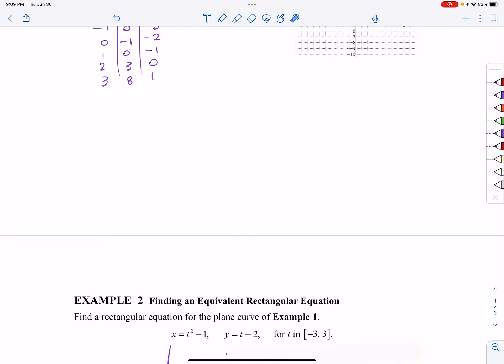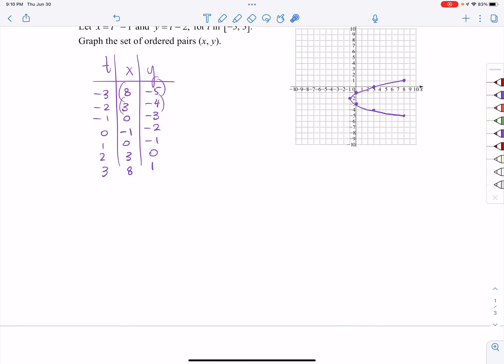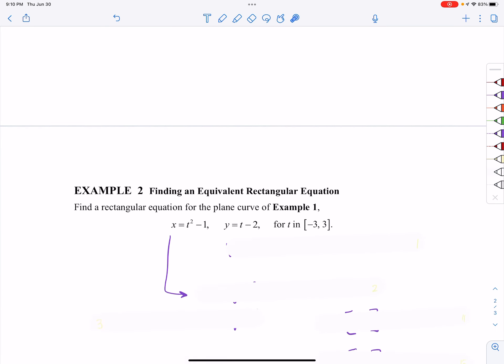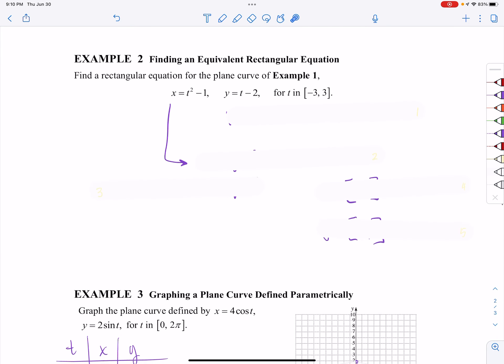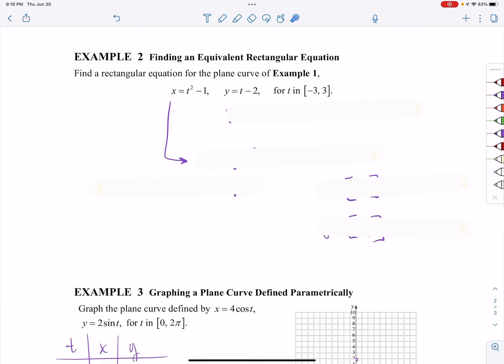Alright, so then what I'm asked to do with the exact same set of equations is find a rectangular equation. Remember rectangular? Rectangular means it's going to be just x's and y's for example 1's curve. Here's how you're going to do this: take one of your equations and solve for t. Since it would be easier to solve this one for t, I'm going to solve for t, which is going to be y plus 2.